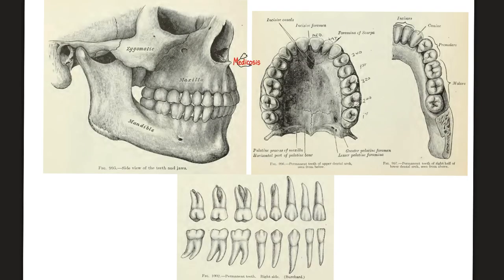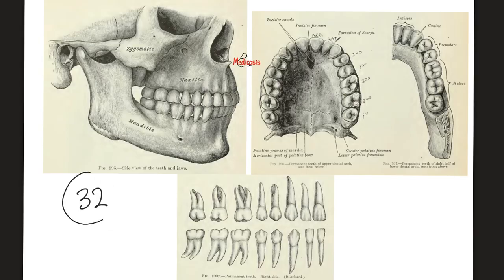Also not counted are your 32 adult teeth — 16 upstairs in the upper jaw called the maxilla, and 16 downstairs in the lower jaw called the mandible. Are teeth considered bones? Your bones have matrix and mineral, and your teeth are the same. A condition known as hyperfluorosis can damage both bones and teeth. A congenital anomaly that damages bone is called osteogenesis imperfecta, and its equivalent for teeth is called odontogenesis imperfecta. So teeth are technically bones, but unfortunately they are not counted among the 206 bones.